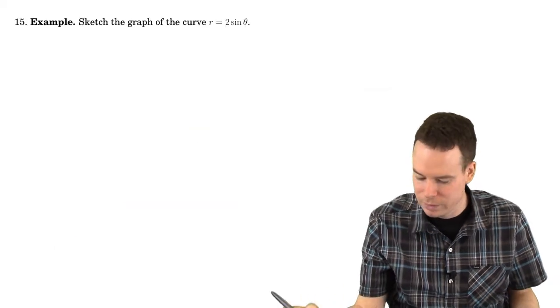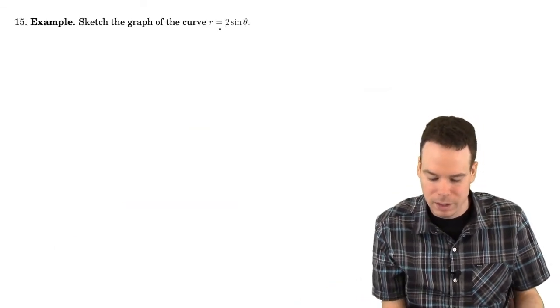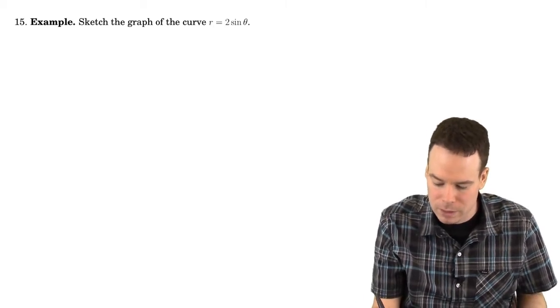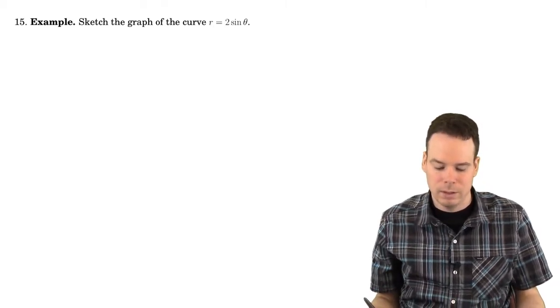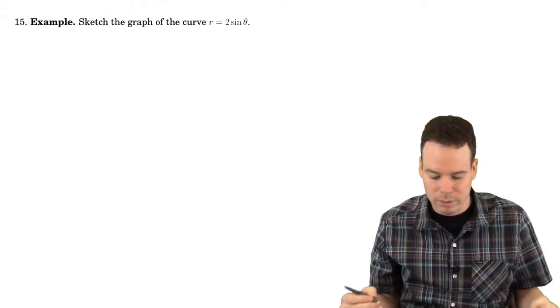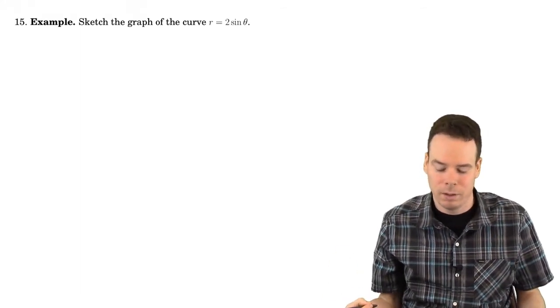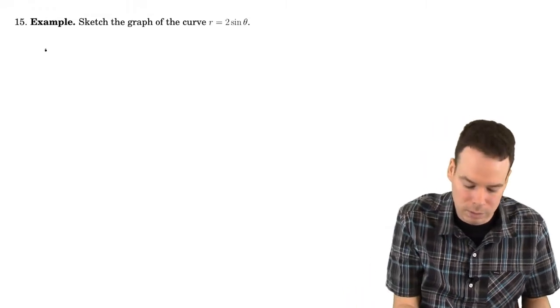Let's now look at a few more examples of curve sketching. So let's sketch the graph of the curve r equals 2 sine theta. Now what we typically do to get going with sketching these curves is to first start in a place of familiarity, that is in the Cartesian coordinate system.